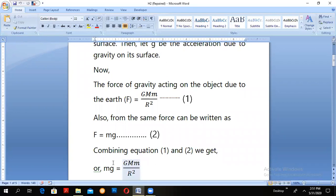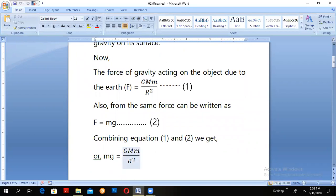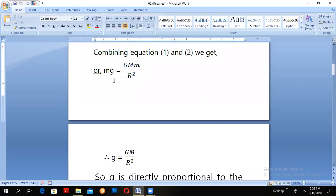Combining equation 1 and 2 we get mg equals to GMm upon R square. Now m and m will get cancelled on each side so we will get the formula g equals to GM upon R square.